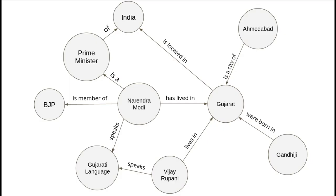A knowledge graph is a representation of a collection of interlinked descriptions of entities, which can be real world objects, events, situations, etc. In normal terms, we can say that a knowledge graph is just like any other graph consisting of nodes and edges.